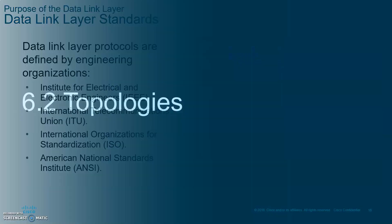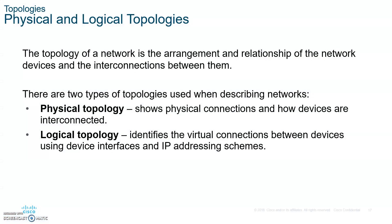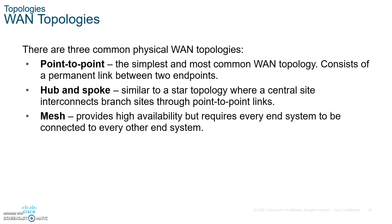Let's look at topologies. There are two different types: the physical topology and the logical topology. You should always know how all the devices are physically connected to each other, and also how they are virtually connected — their IP addresses, subnets, what groups or departments they're in, what VLANs they belong to, and what security rights and privileges each group has. That's the logical topology.